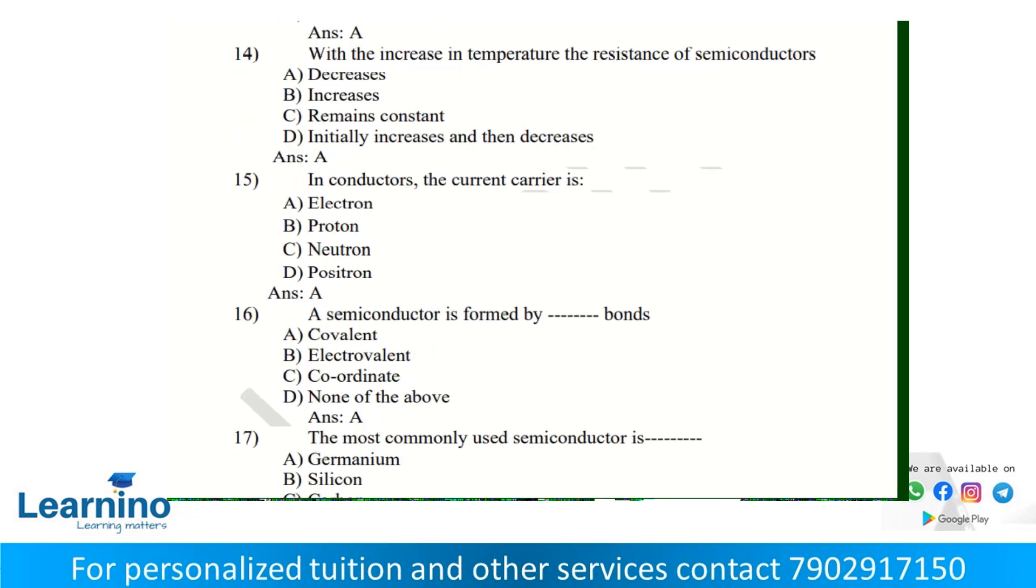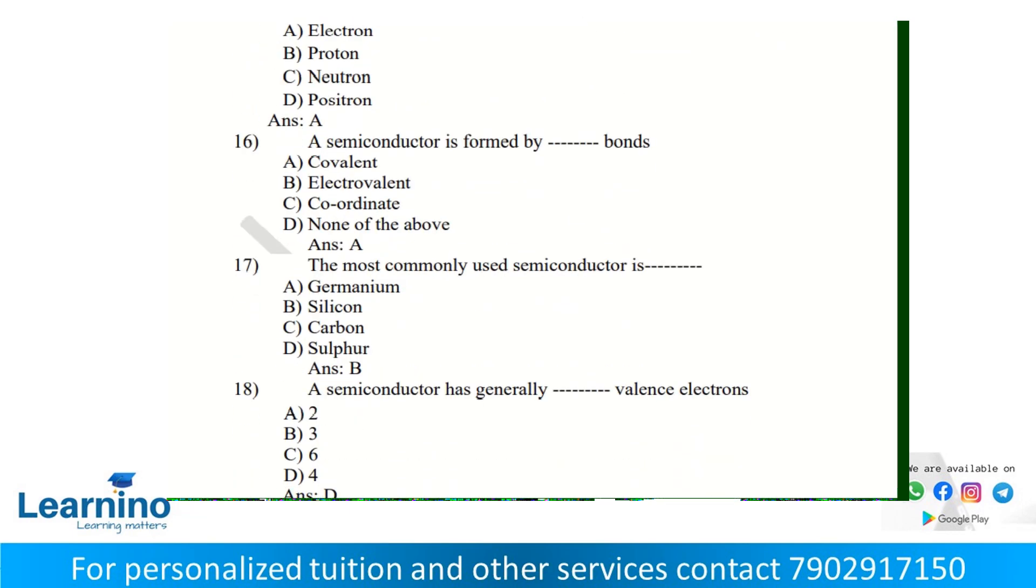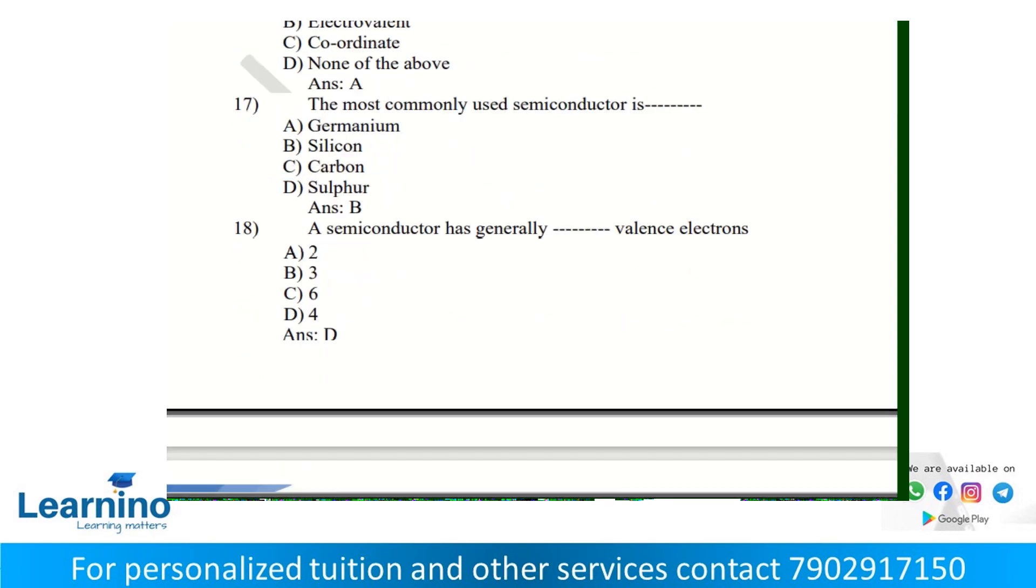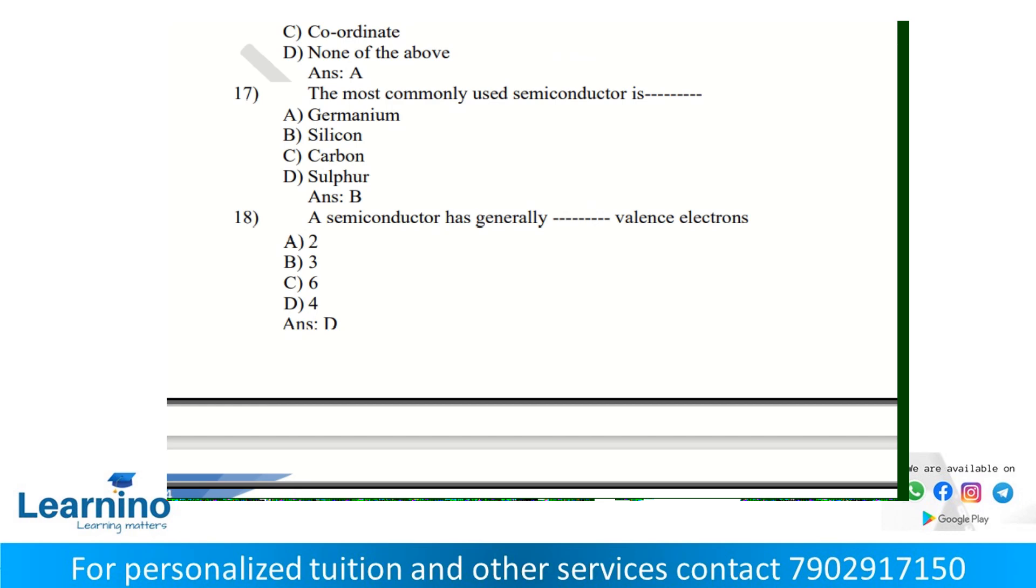In conductors, the current carrier is electron. A semiconductor is formed by covalent bonds. Silicon and germanium share electrons in the outermost shell. There are four types of bonds: ionic, covalent, metallic, and molecular. The most commonly used semiconductors are silicon and germanium. Silicon is stable, abundant, and inexpensive.